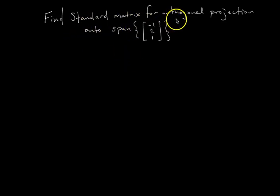All right, we want to find the standard matrix for a transformation, which is the orthogonal projection onto the span of this one vector. So we're projecting onto a line, right?